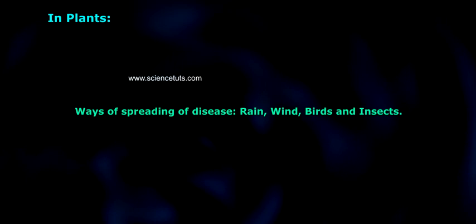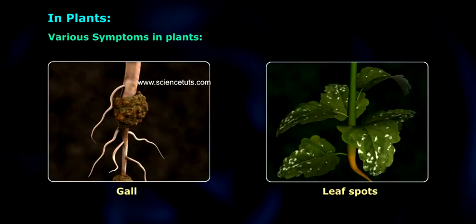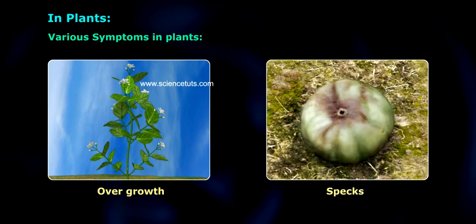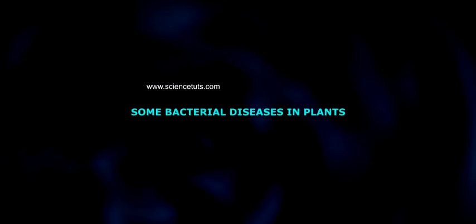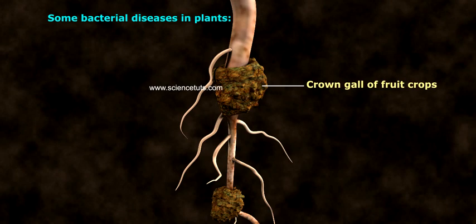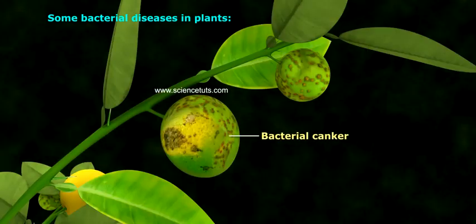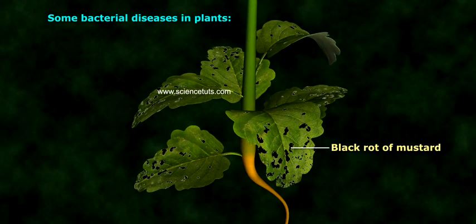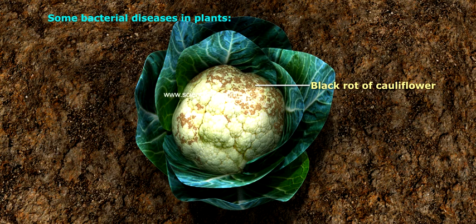Ways of spreading of disease: rain, wind, birds, and insects. Various symptoms in plants include blights, cankers, galls, leaf spots, overgrowths, specks, scabs, and wilts. Some bacterial diseases in plants: crown gall of fruit crops, ring rot of potato, bacterial canker, black rot of mustard, bacterial blight of potato, and black rot of cauliflower.